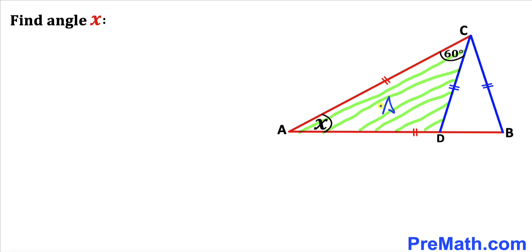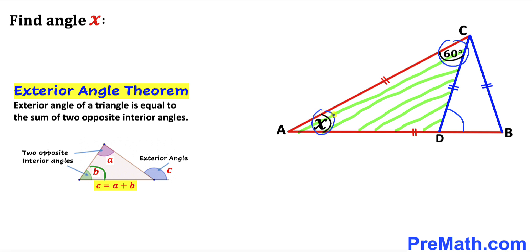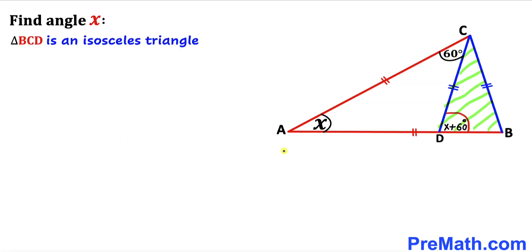Let's focus on triangle ADC and recall the exterior angle theorem. According to this theorem, the exterior angle of a triangle is equal to the sum of the two opposite interior angles, as shown in this diagram where C equals A plus B. Therefore, this angle is our exterior angle and is equal to the sum of the two opposite interior angles: X plus 60 degrees.